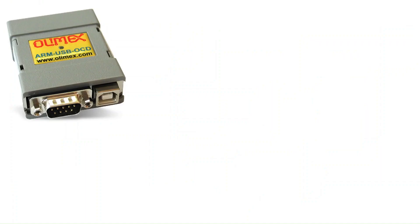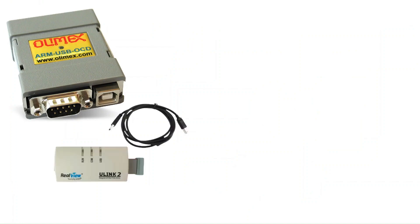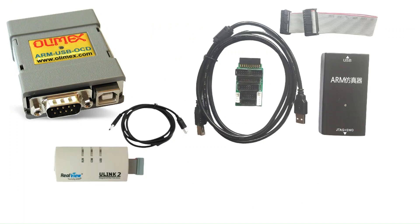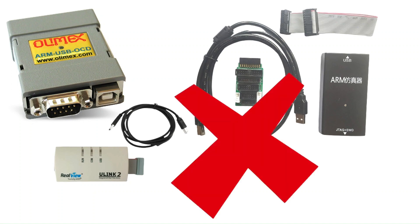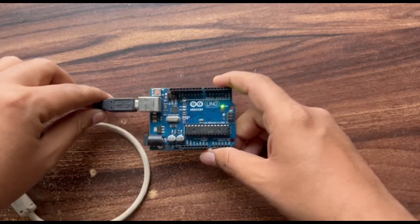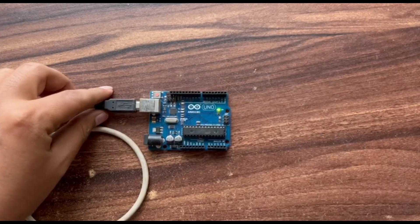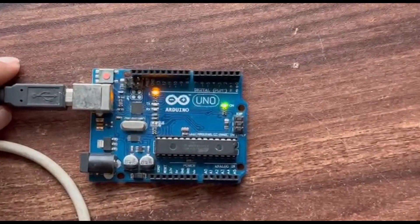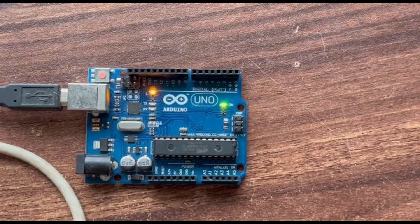When it comes to debugging a controller, we typically rely on specific debugging tools. However, in this tutorial, we'll take a different approach. We won't be using any of those tools. Instead, we'll harness the power of the serial interface for debugging. And let me tell you, this approach is truly awesome!